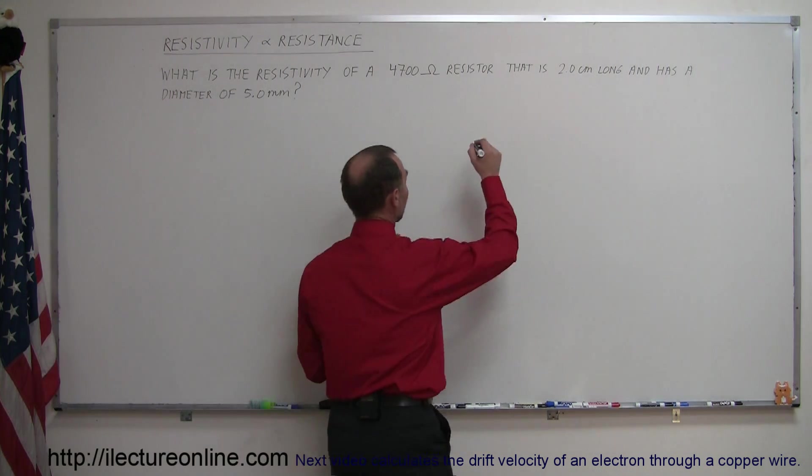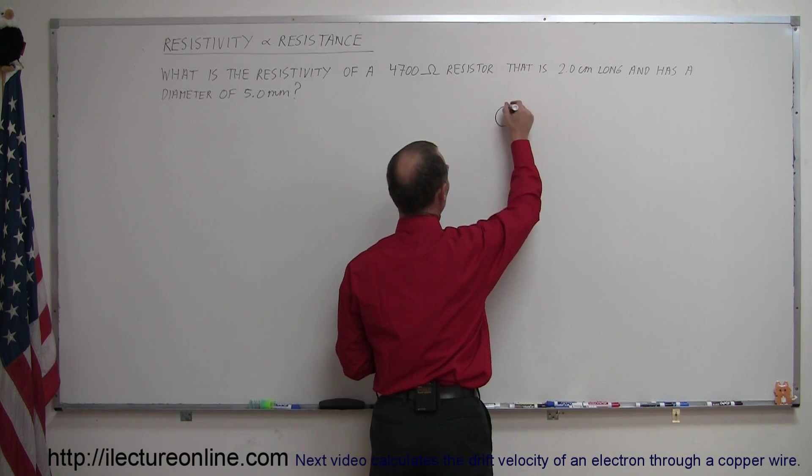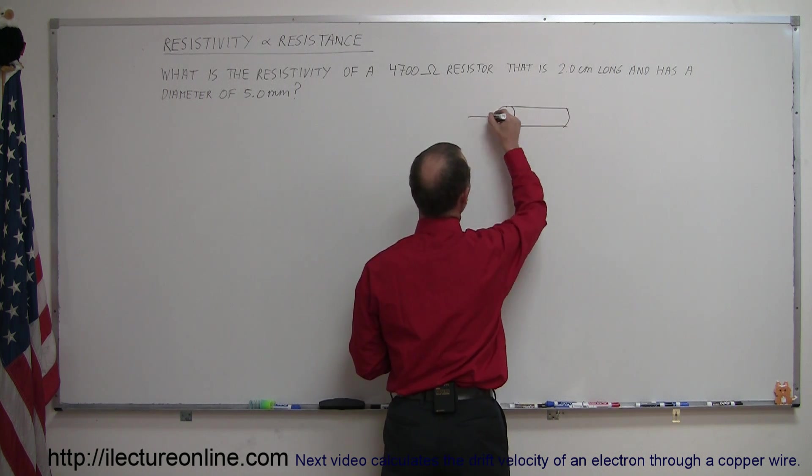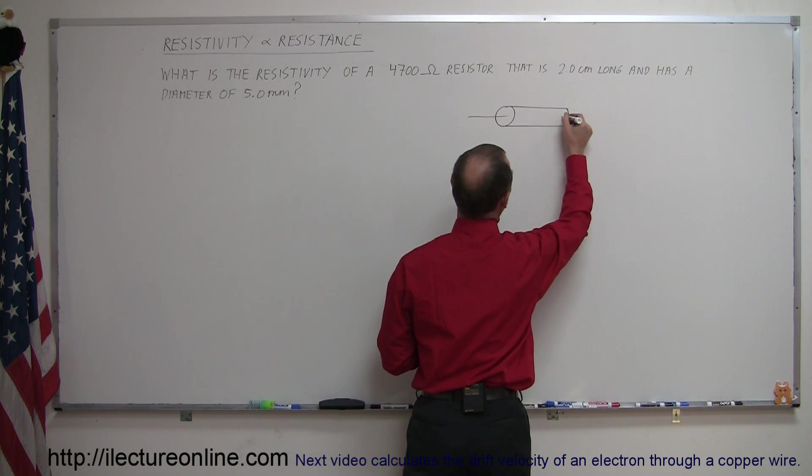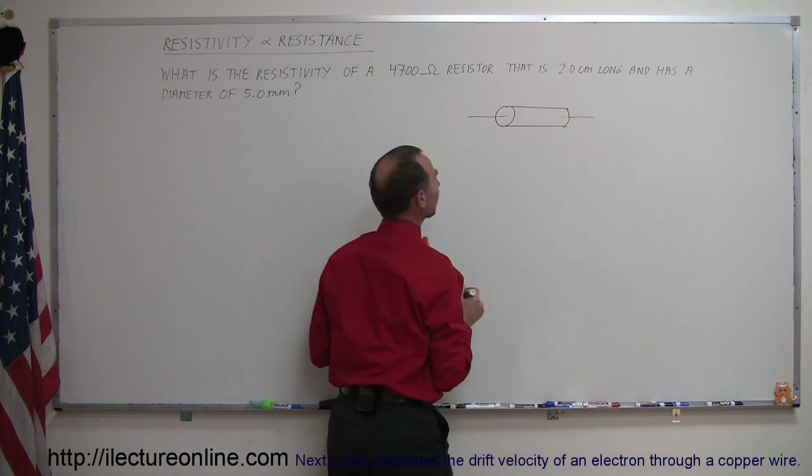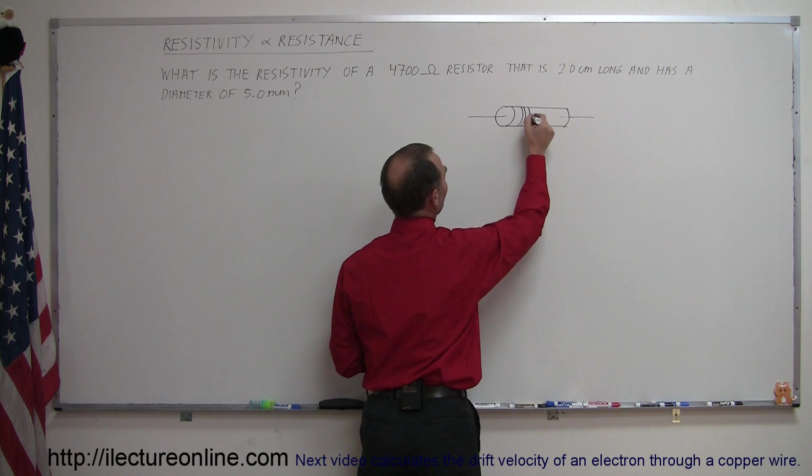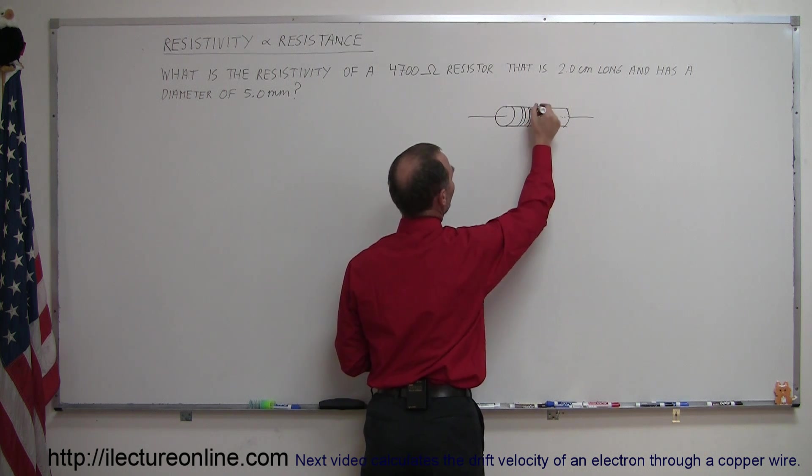So let's draw the little resistor. Resistors typically are cylindrical objects. In this particular case, we have a lead coming out one side, a lead coming out the other side. There's the little resistor, and usually it has little color bands that indicate the value of the resistance, like so.